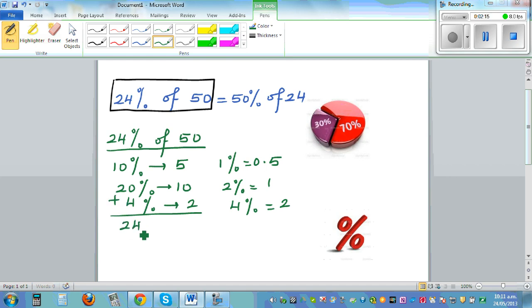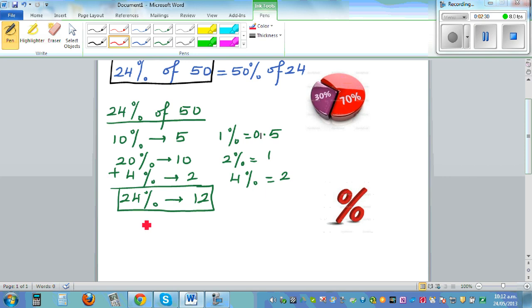You can add these together, so 24% of 50 is 12. Now let's check it out. 50% of 24, well, 50% is half, so half of 24 is also 12.